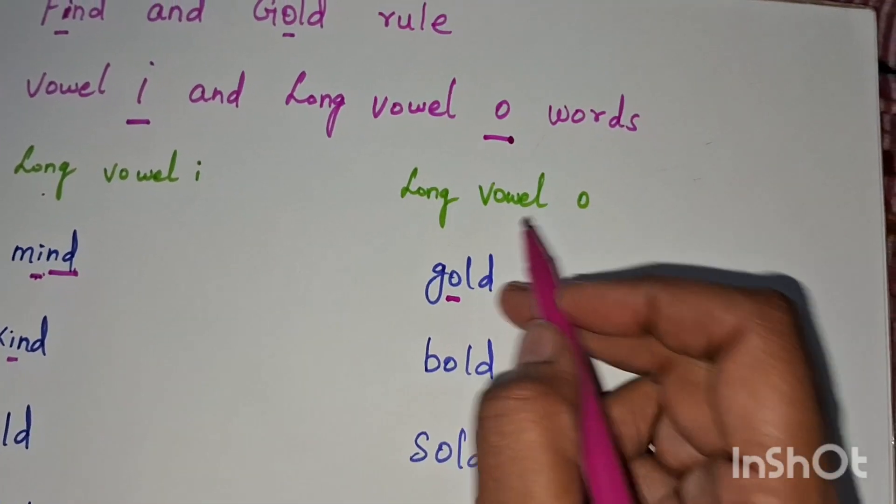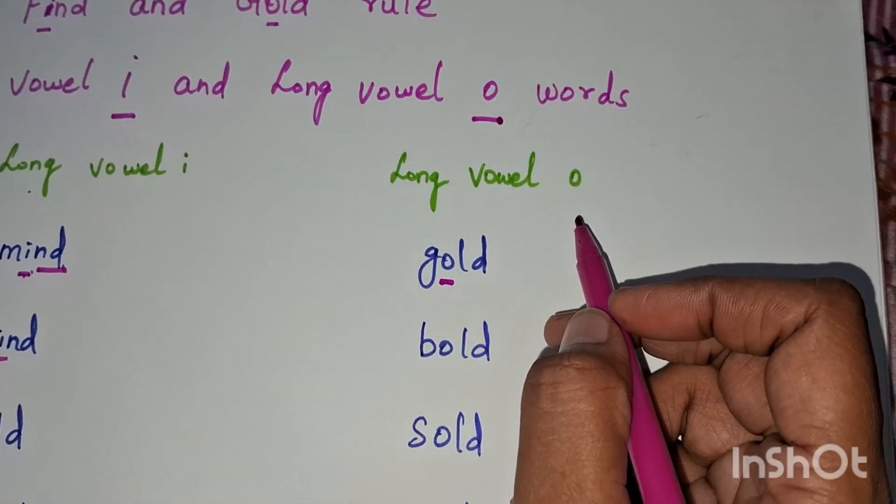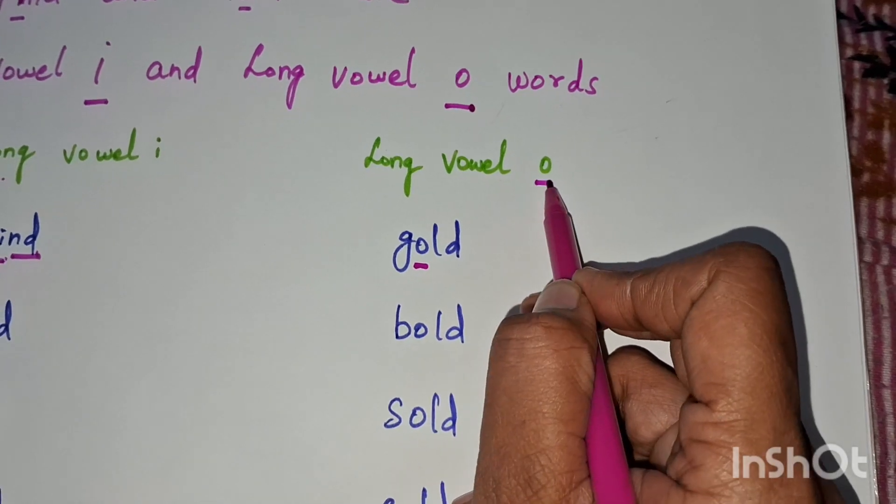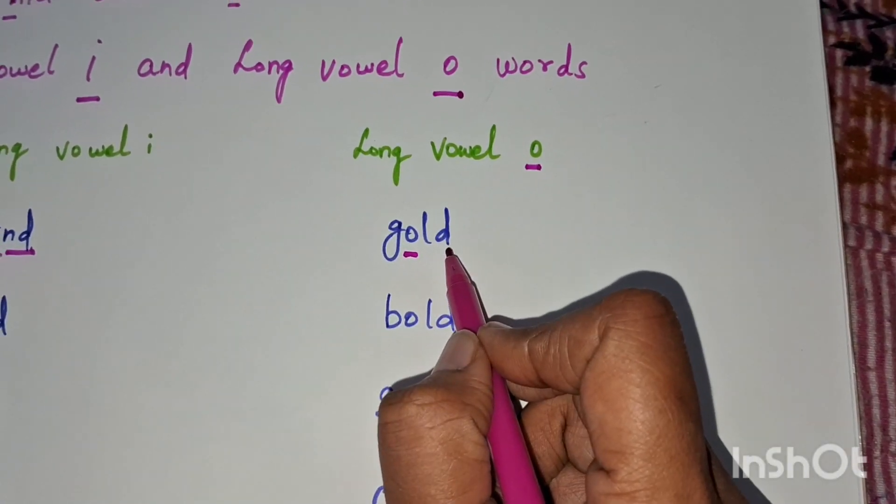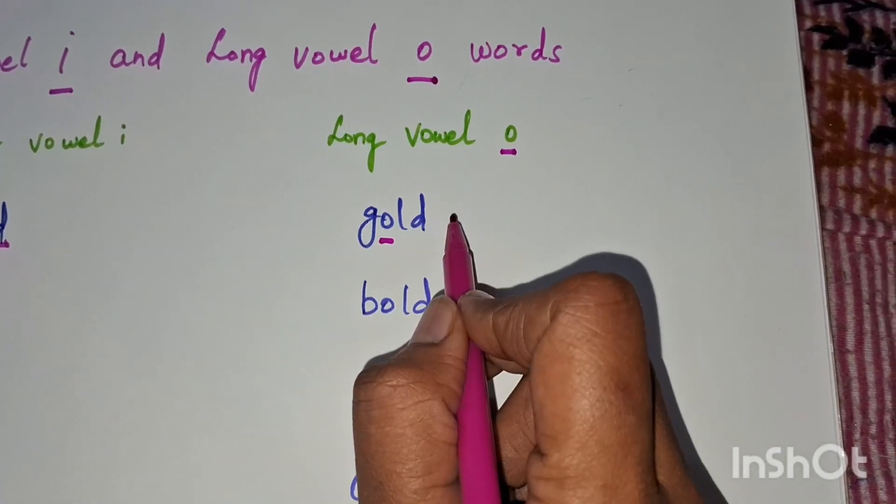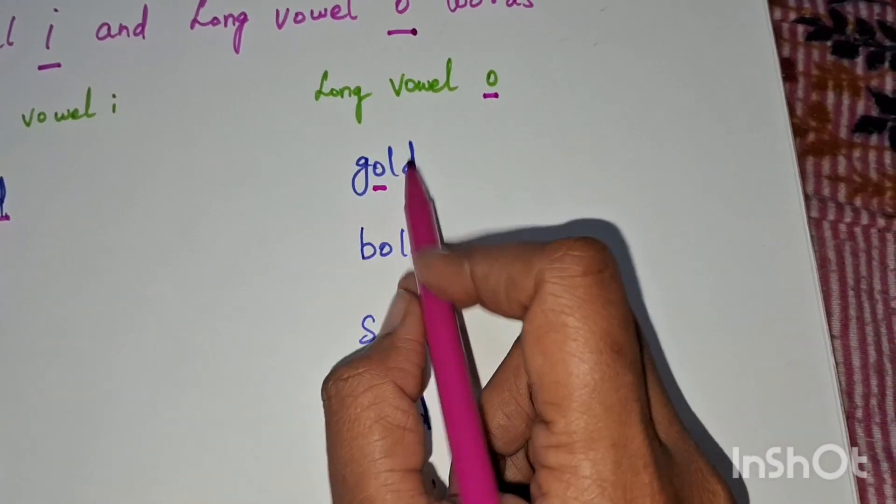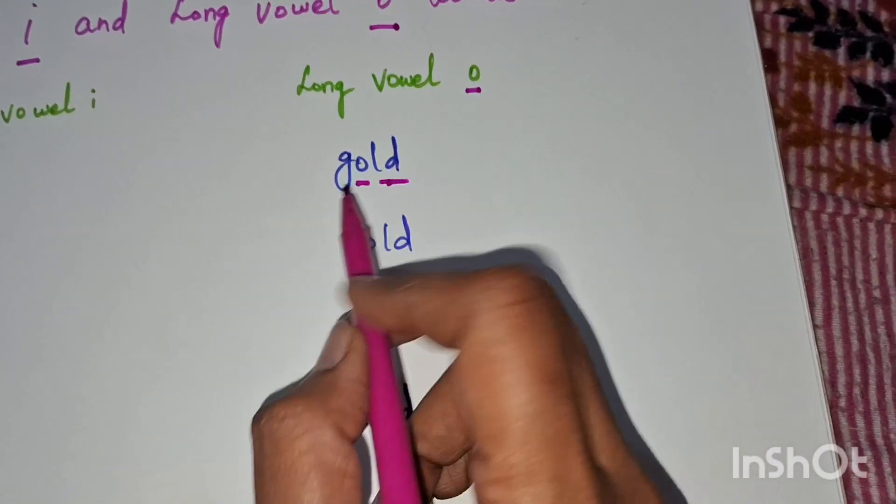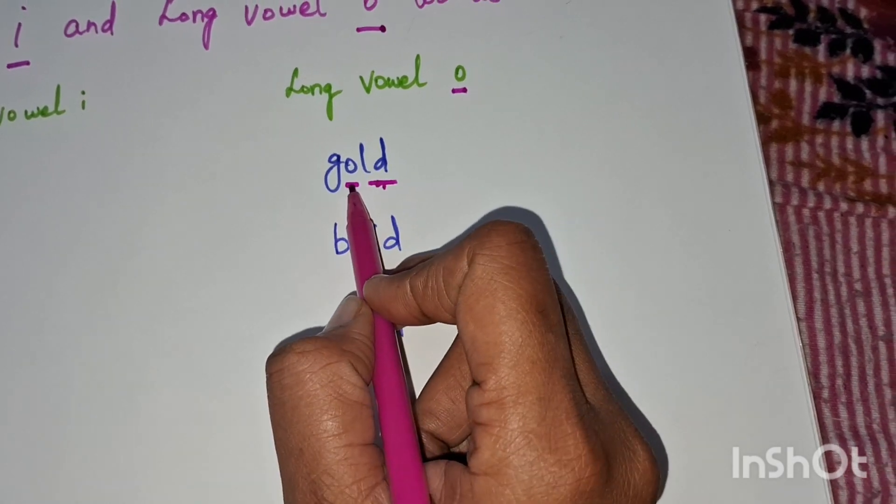And this is long vowel o. So o says the long o sound before two consonants in a closed syllable word. Okay, this is the closed syllable word. These are the two consonants. Before the two consonants, o will be in a long vowel sound.